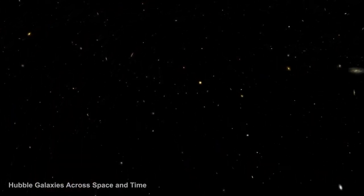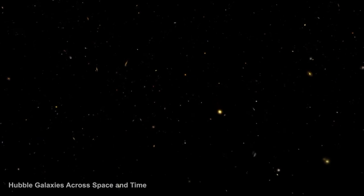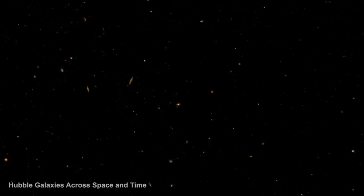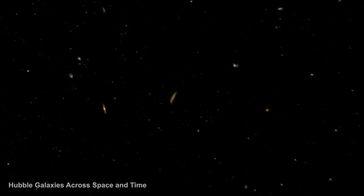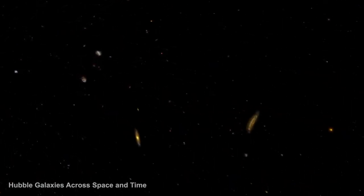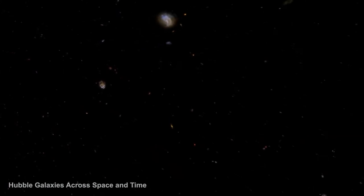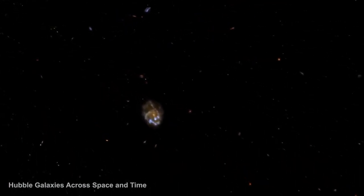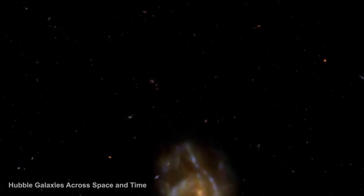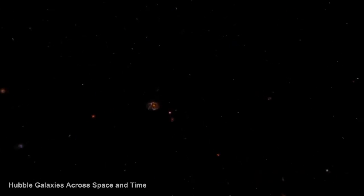The flow of all galaxies away from each other, with faster velocities the further away from each other they are, cannot happen in a fixed volume because in a fixed volume some reference frames would have to have distant objects heading towards them for others to have them moving away. It can only be explained if the space that these galaxies exist in is itself expanding.